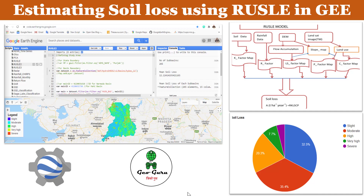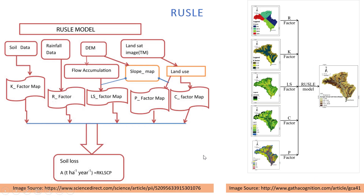Hello and welcome to the channel JioGuru. In this video we are going to learn how we can calculate the soil loss using the Revised Universal Soil Loss Equation — RUSLE — in the Google Earth Engine environment. RUSLE is a modified version of USLE through which we can estimate the amount of soil loss in tons per hectare per year for any area using geospatial inputs.